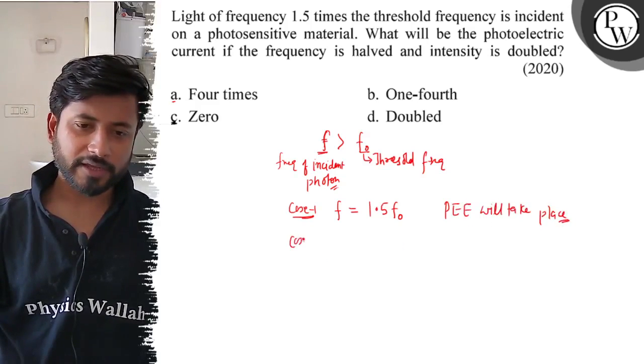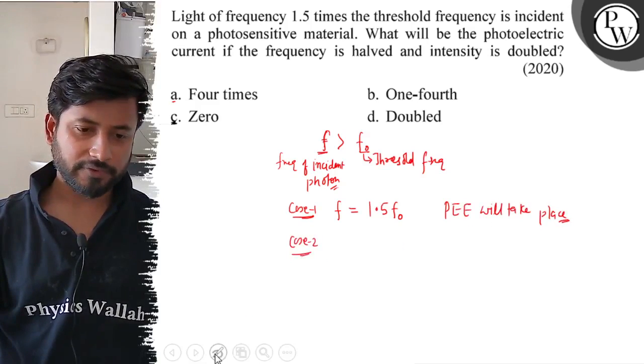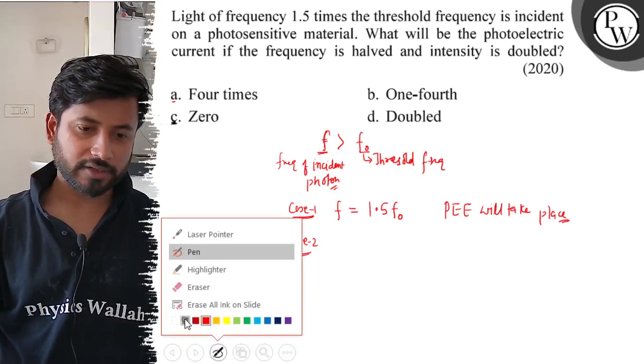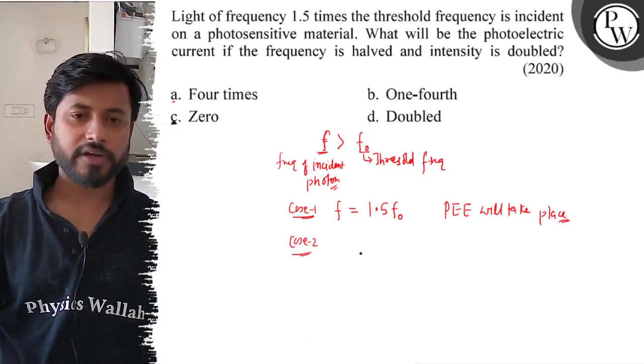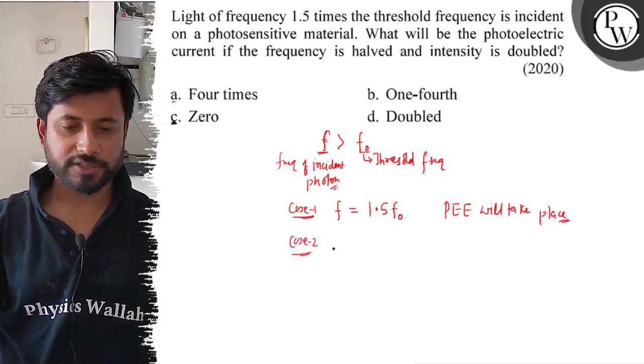Second case: the frequency is halved and intensity is doubled. What will be the photoelectric current when the frequency is halved and intensity is doubled?